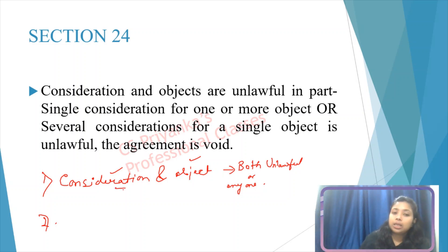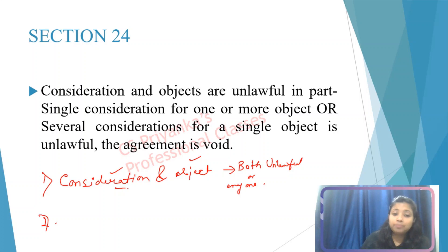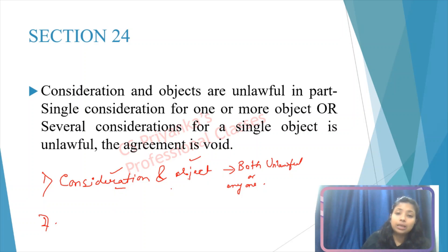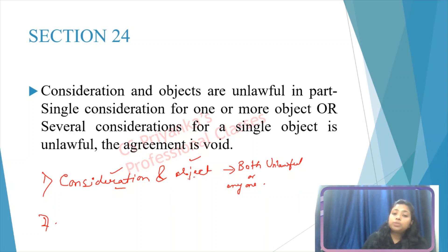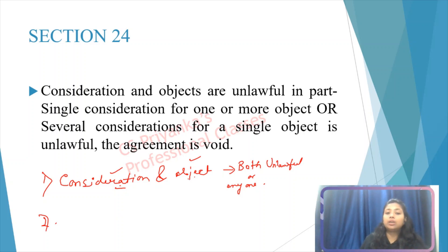Consideration means money — whatever money you are paying or transferring that is illegal, void, or black money. Object means the property or goods which you are transferring or selling — those are banned products or restricted by law. In such cases, if both consideration and object are unlawful, or even any one of them is unlawful or illegal, then your agreement is void.